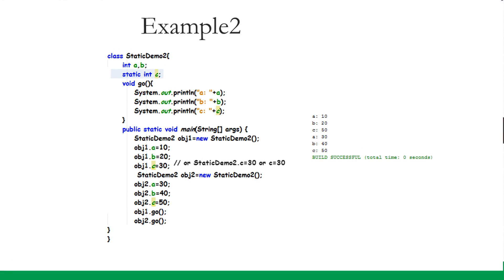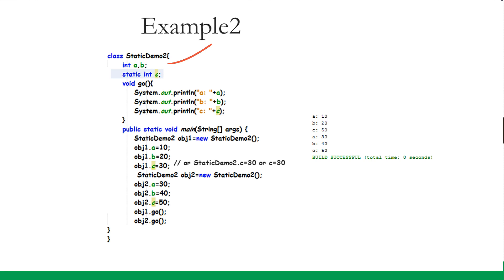Now let us see one more example demonstrating that a static variable is shared among all the objects of a class. If there are multiple objects of a class, all those objects share a single copy of the static variable. If we change the value of a static variable, that change is reflected for all objects. Instance variables, however, are separately available for each object — each object has its own separate copies of a and b, but c is shared.